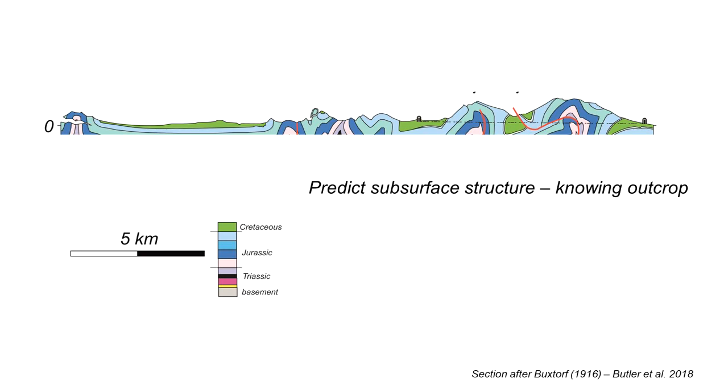We can set up the problem here. Commonly we'll know the surface geology, we can map it, recognize the orientation and distribution of rocks at the Earth's surface. We know the outcrop and our challenge then is to predict how these structures we see at the outcrop go down below into the subsurface. We're going to look at how we can use concepts of cross section balancing and develop these into the idea of area balancing.